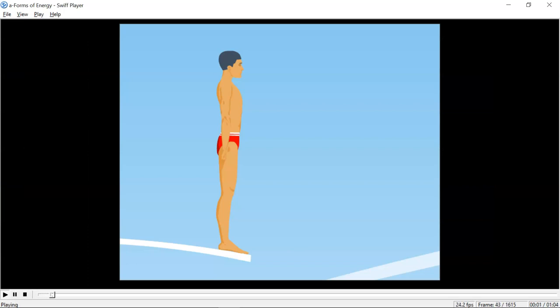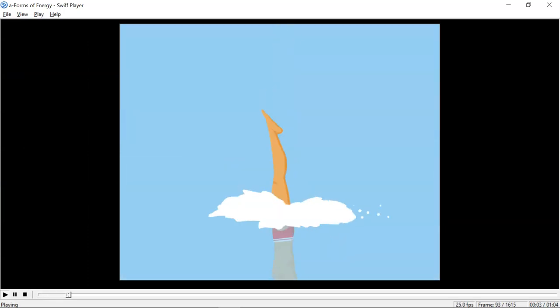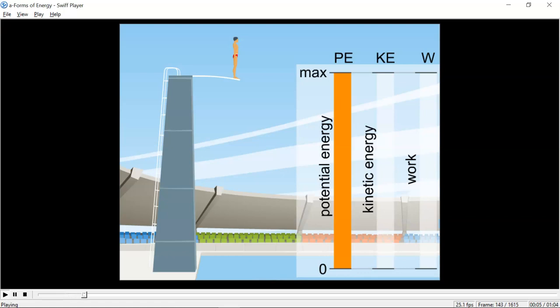When a portion of energy disappears from some place, it must reappear in some other place in a different form. For example, a diver has potential energy because he is high above the level of the water. As he jumps, his potential energy decreases with his decreasing height.